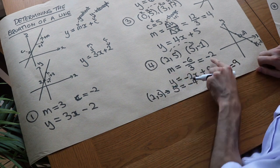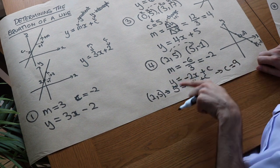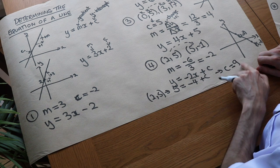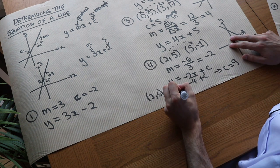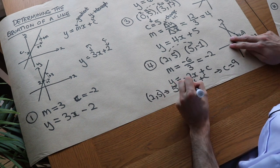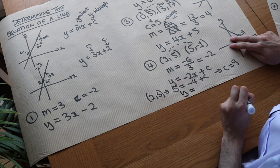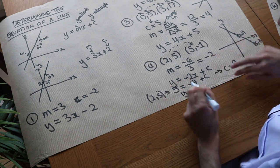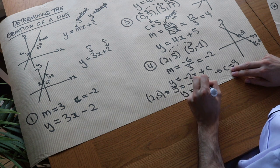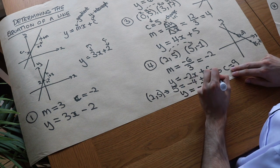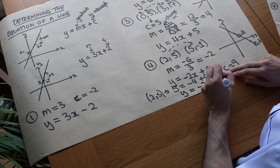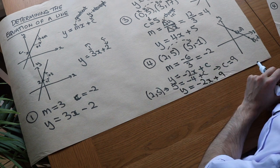Now we've got m, which is minus 2, and c, which is 9. So we know the equation of the line: it's y equals minus 2x plus 9. And we have finished.